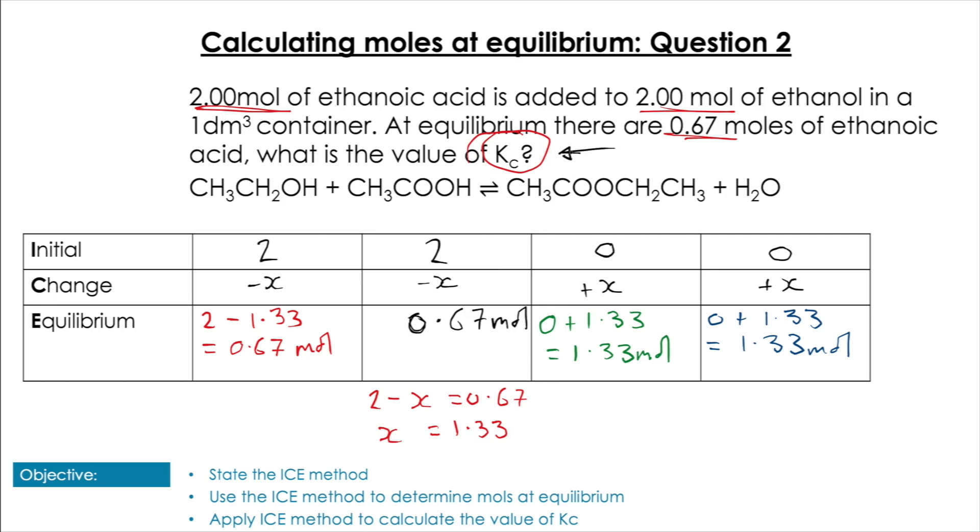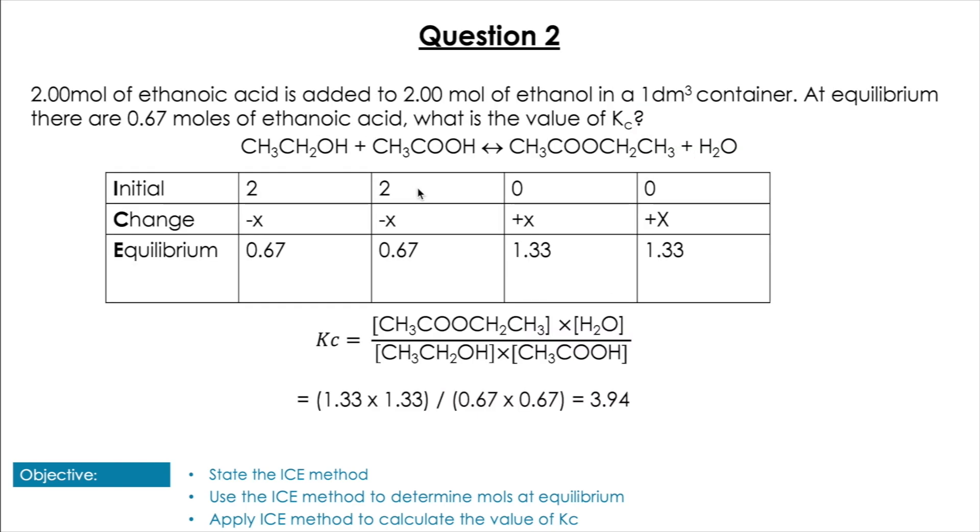Now we have all the moles at equilibrium. The question asks us to find Kc, so we need concentrations. Luckily, the container is 1 dm³, so dividing by 1 means our concentrations equal the number of moles: 0.67, 0.67, 1.33, and 1.33 mol/dm³.